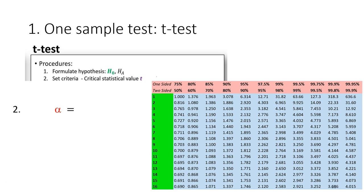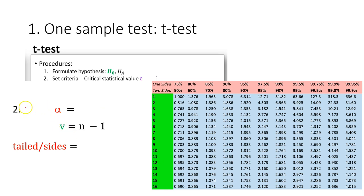To set the criteria, determine the alpha level, the degree of freedom, and whether this is a one-tail or two-tail test. Pause the video and try it yourself. You can choose any alpha value — the commonly used ones were discussed in the p-value lecture. Calculate the degree of freedom, then determine the tail type based on the hypothesis. Finally, get the critical t-value from the table.